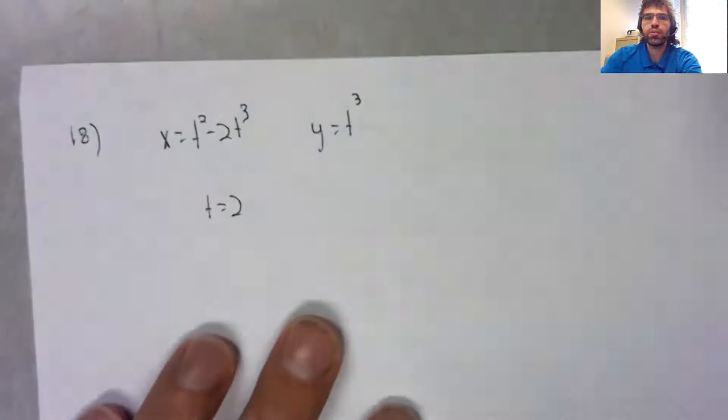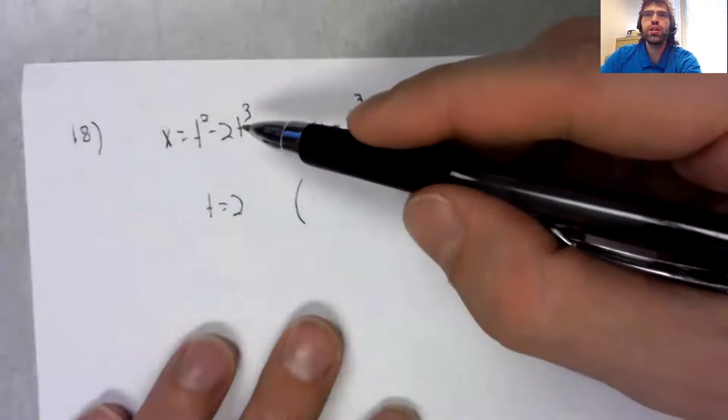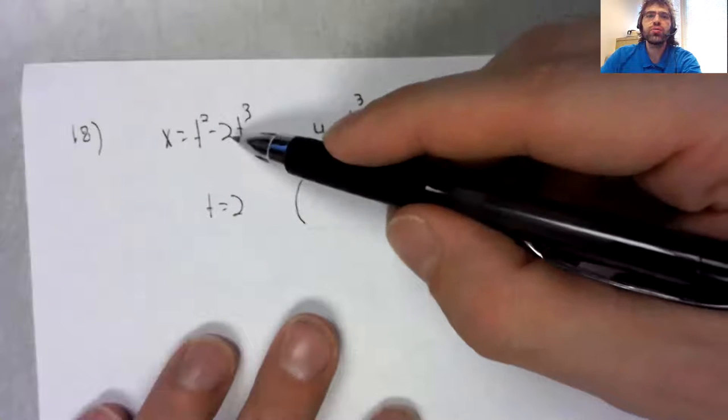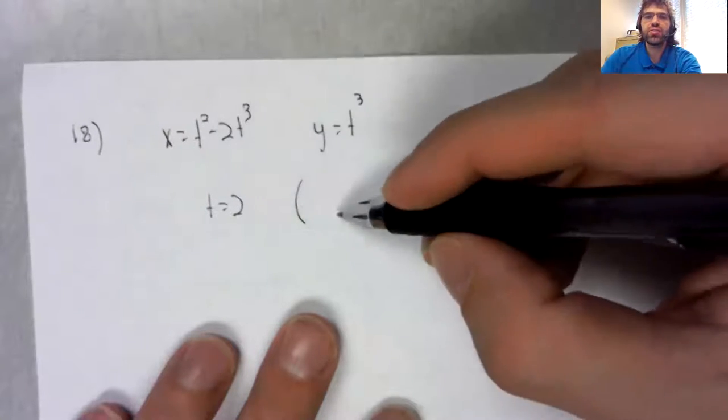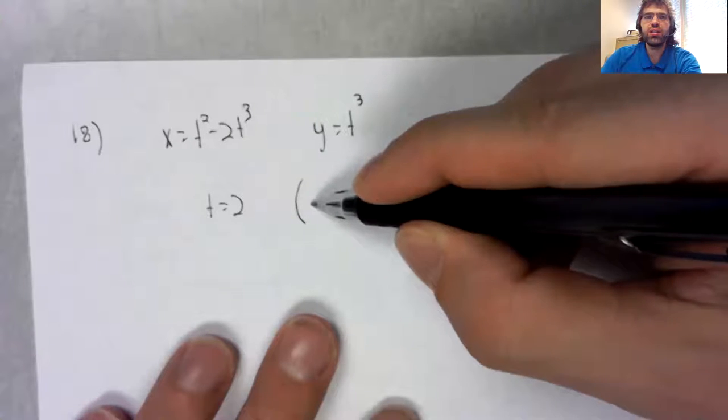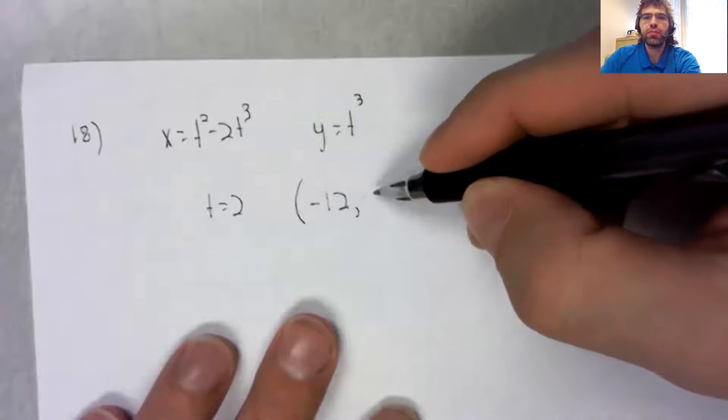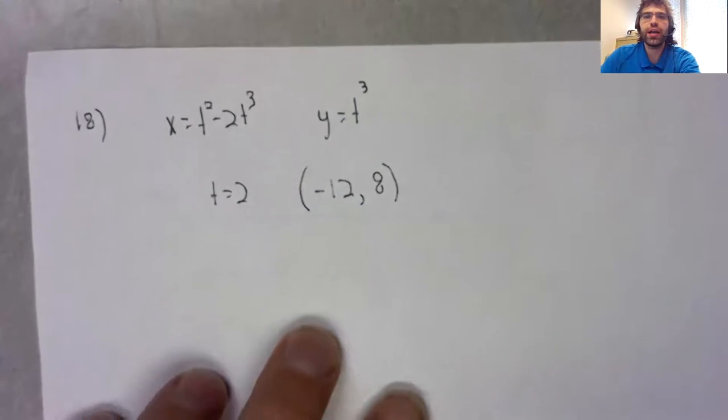So we'll get the point when t equals two. Let's see, two cubed is eight times two is 16. Four minus 16 should be negative 12 comma eight.